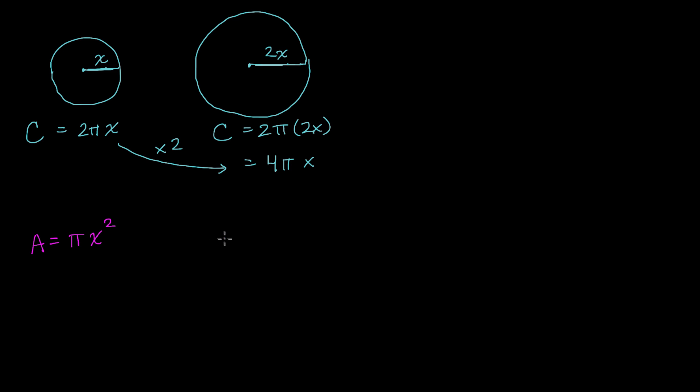In this circle right over here, the area is going to be equal to π times the radius squared, but now the radius is 2x. 2x squared. Now what is this going to be equal to? Well our area is equal to π. 2x squared is 2x times 2x, which is the same thing as 4x². 4x².